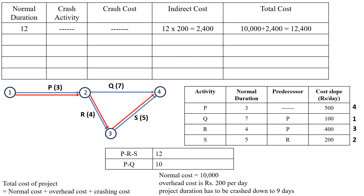The total cost formula is: total cost equals normal cost plus overhead cost plus crashing cost. Initially, without any crashing, the critical path is P-R-S with duration 12 days. The indirect cost is 12 days into 200 rupees per day, which is 2,400. So the total cost is 10,000 plus 2,400, equal to 12,400.